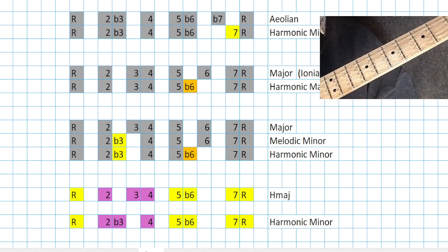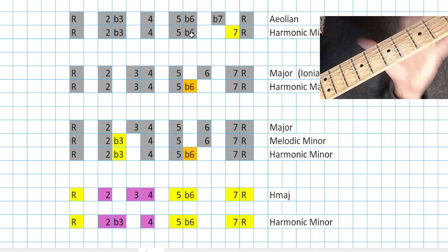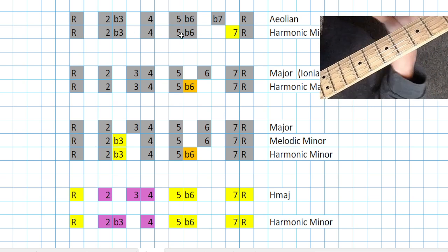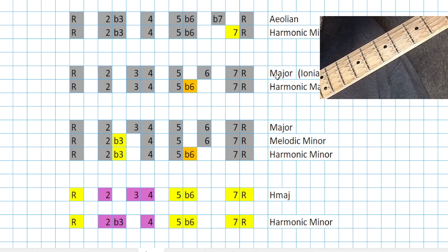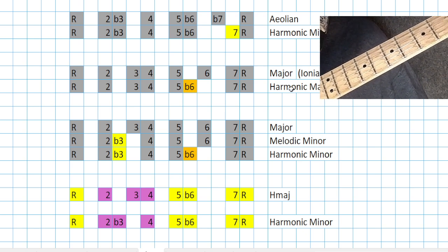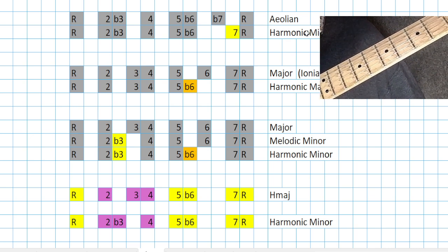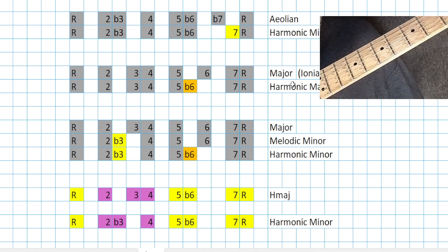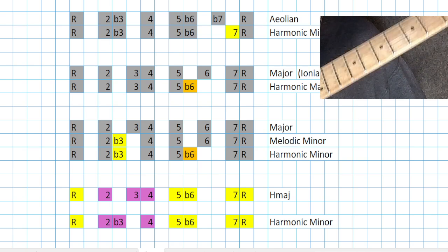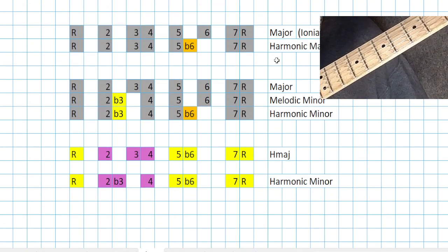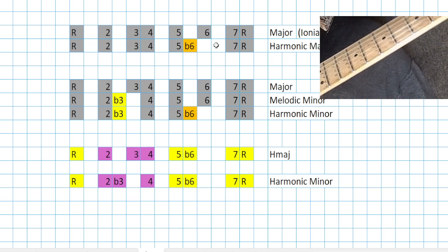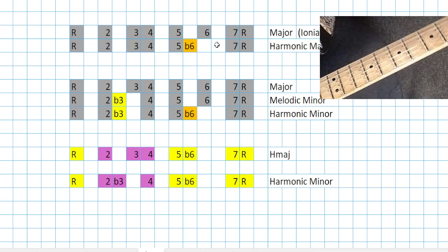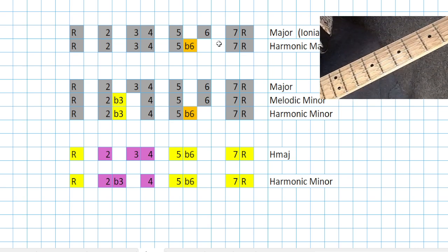Harmonic minor is one note different from natural minor, even though it's quite a few notes different from the major scale. They kept the front end the same and changed the back end of Aeolian with one change. Now let's do major to harmonic major — maybe that's the reason for the name 'harmonic' in both: they both contain a very similar sonic black hole, a void in the space of that scale.